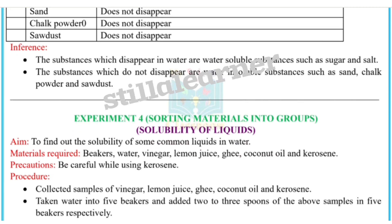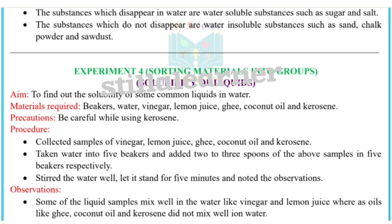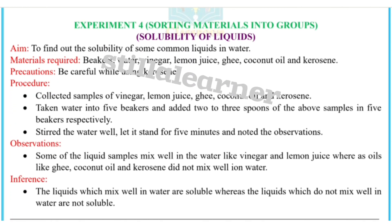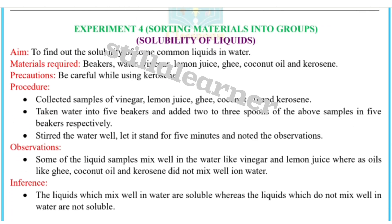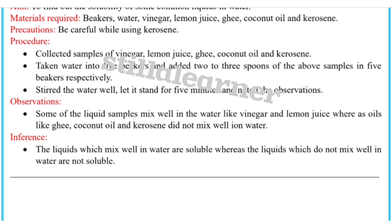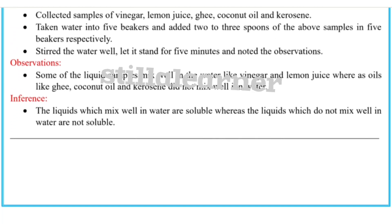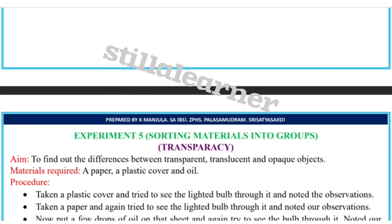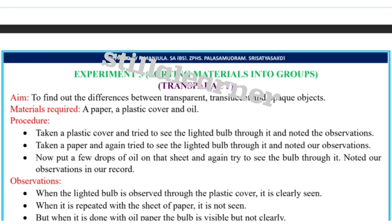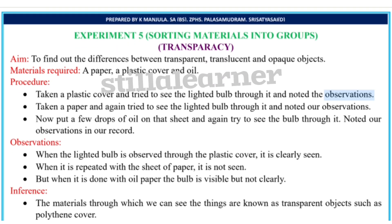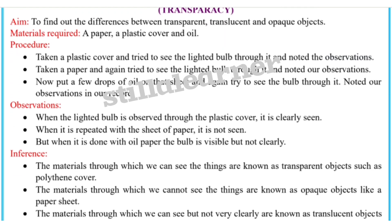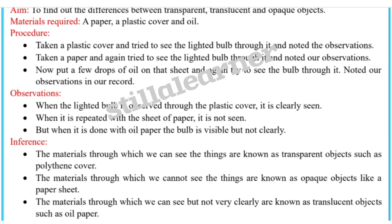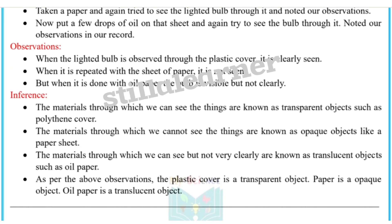Experiment 4 is sorting materials into groups — solubility of liquids. Experiment 5 is sorting of materials into groups — transparency. Just pause the video and write it down in your project work.